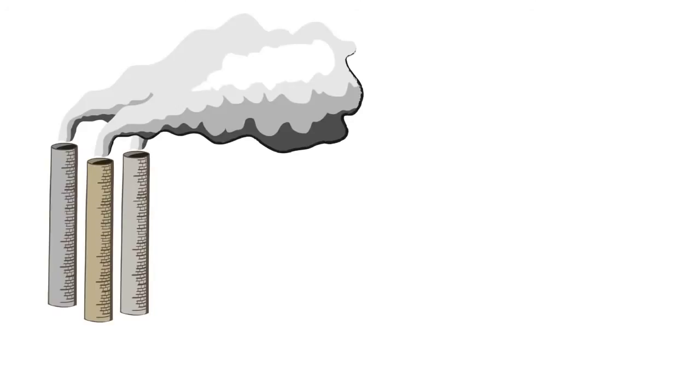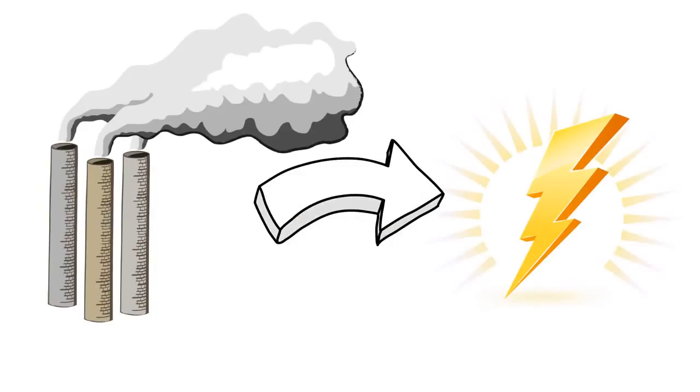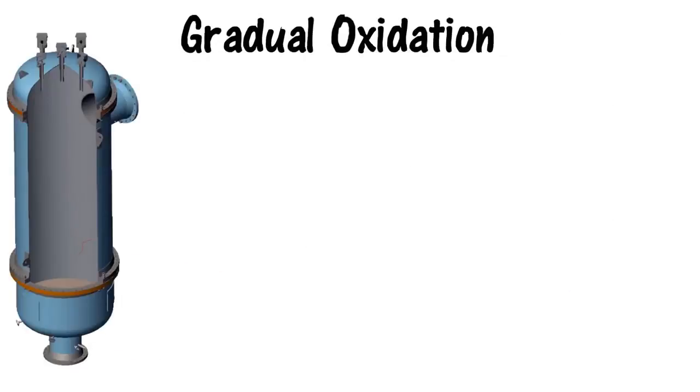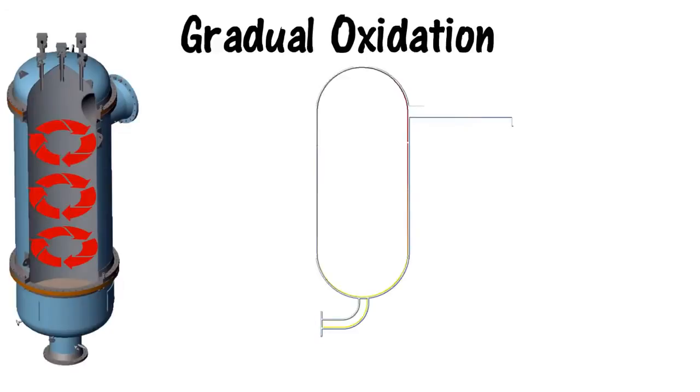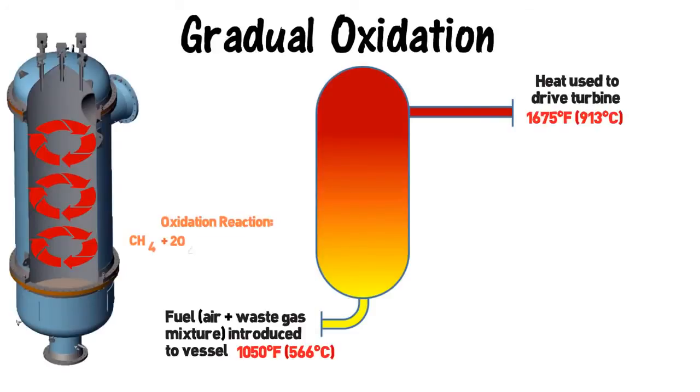Enercore's power station enables traditional industrial processes to generate power from their waste gases using this cutting-edge technology. Gradual oxidation is a chemical reaction substantially different than conventional combustion-based energy. Enercore controls the gradual oxidation reaction utilizing a pressure vessel called the gradual oxidizer.